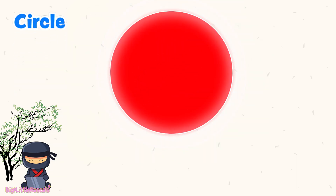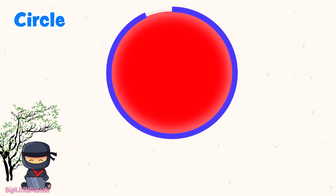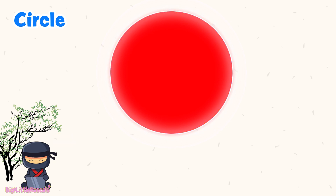How about this shape? It's a circle! But how many sides does a circle have? It's tricky, right? A circle has no straight sides. So how do we calculate the perimeter of a circle?